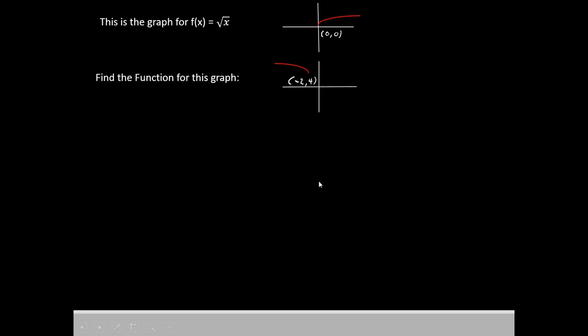Once again I've given you a graph. This time the graph is of the square root of x function. Notice it looks like an arc that points to the right and has a starting point at (0, 0). Once again we're trying to do a transformation on the graph. We're going to move the vertex from (0, 0) to (-2, 4).